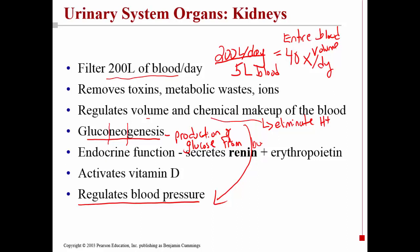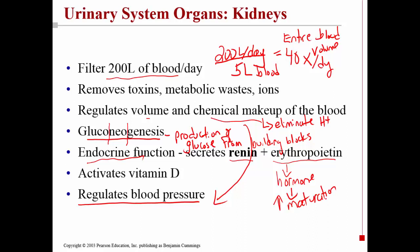Another role of the kidney involves hormones. A part of the kidney is actually endocrine tissue. Some of the endocrine tissue secretes a hormone called renin, which we'll discuss shortly. Another part of the endocrine tissue releases a hormone called erythropoietin, which you may remember from the chapter on blood — it is a hormone that increases the maturation of red blood cells, essentially increasing the number of mature red blood cells released.